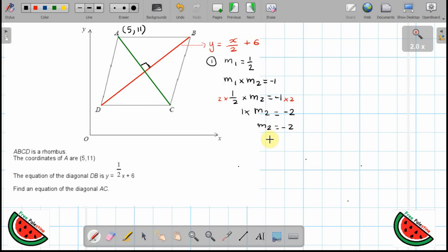So m2 is equal to minus 2, or you could have just done the negative reciprocal, whichever way you find easier. So the gradient of the second line, the perpendicular line AC, is equal to minus 2. I can then write the equation as y equals minus 2x plus c, in the form y equals mx plus c where m is the gradient. This is for AC.